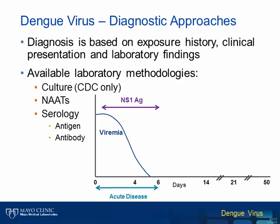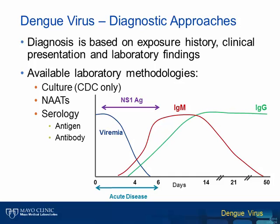The IgM antibody response to dengue virus infection becomes detectable roughly four to five days following symptom onset and remains elevated for two to three months. Finally, IgG antibody levels become detectable five to seven days following symptom onset and will remain elevated for years to decades.